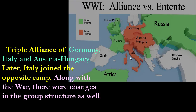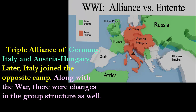The Triple Entente — England, France and Russia — shown in green. Whereas the Triple Alliance consisted of Germany, Italy, and Austria-Hungary, shown in red. Later, Italy joined the opposite camp. So these were the two groups: Triple Entente of United Kingdom, France and Russia; and Triple Alliance of Germany, Austria-Hungary and Italy. Along with the war there were changes in the group structure as well.